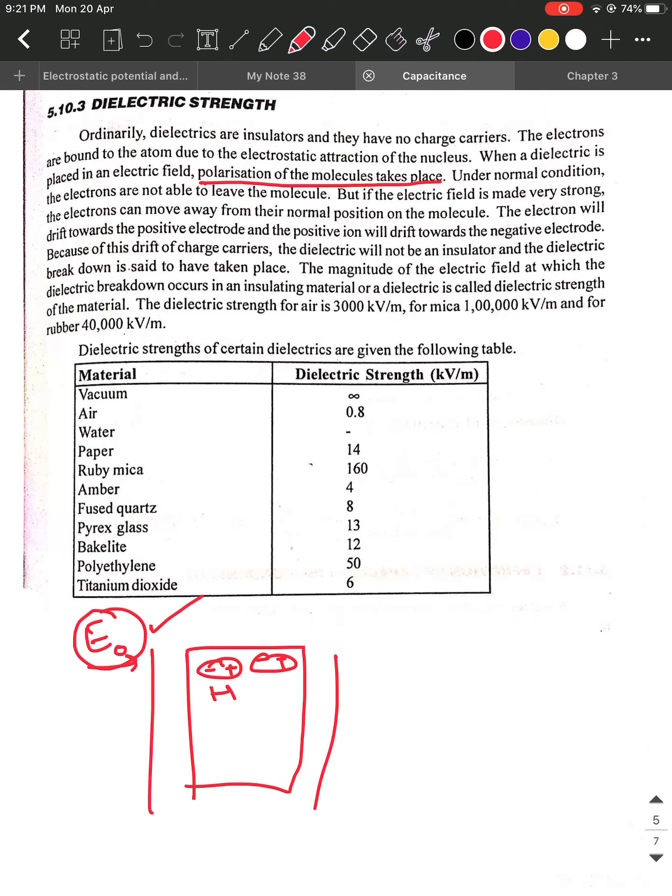As you keep increasing the electric field, there will be a particular point beyond which the distance between the dipole will cross its threshold and the electrons will become free electrons. Initially till the permissible limit, this dielectric is behaving like an insulator. After a specific value of the electric field, after you increase it beyond the threshold, the free electrons come out meaning it gets converted from insulator to conductor.